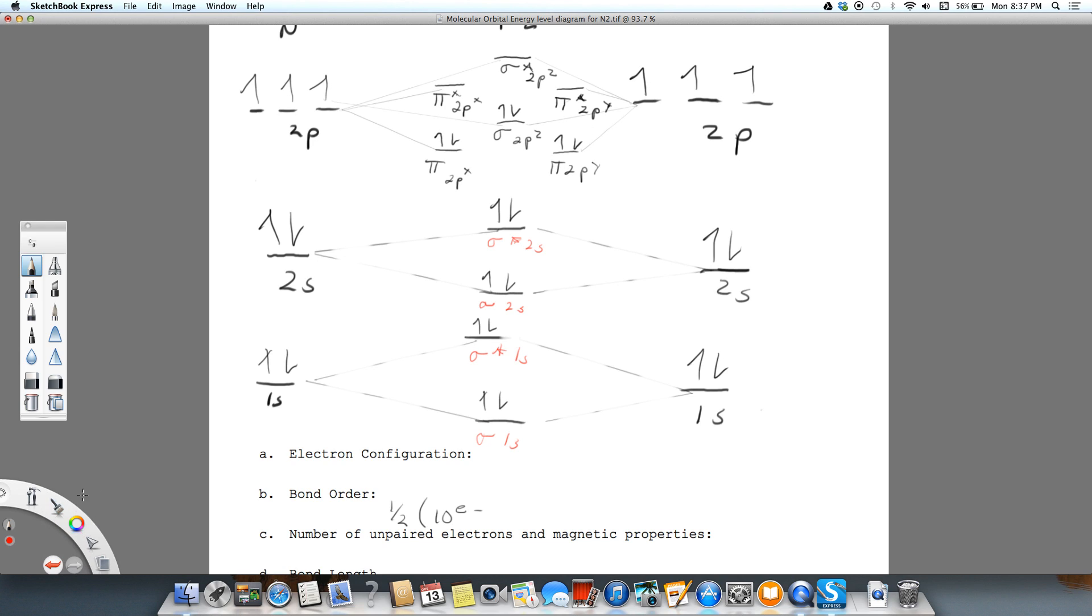I'm going to circle the bonding electrons. We'll do that in blue. So these are all of our bonding electrons, of which we have 10.